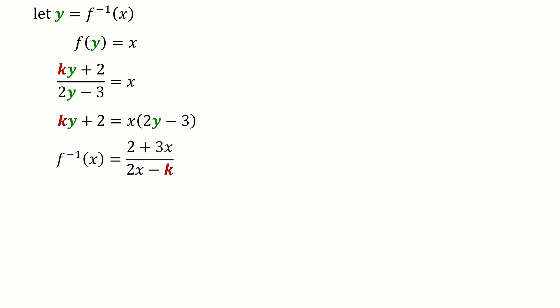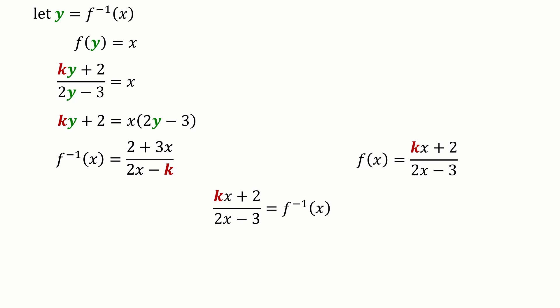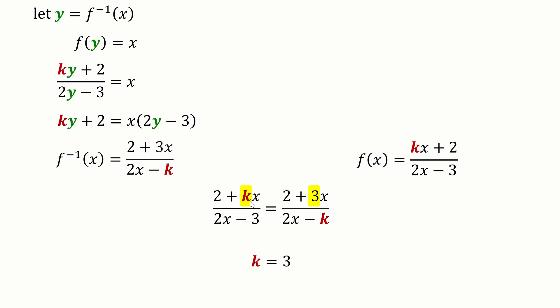Since f(x) = f⁻¹(x), we compare the two results: f(x) = (kx + 2)/(2x − 3) and f⁻¹(x) = (2 + 3x)/(2x − k). Comparing numerators: (2 + kx) must equal (2 + 3x), so k = 3. Comparing denominators: the constant in the denominator is 3 on one side and k on the other, confirming k = 3.